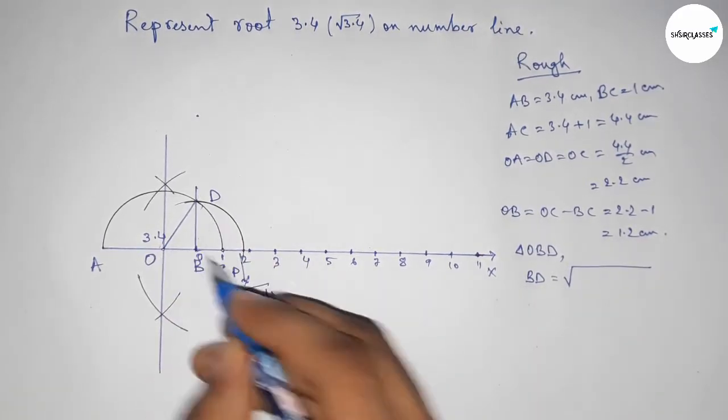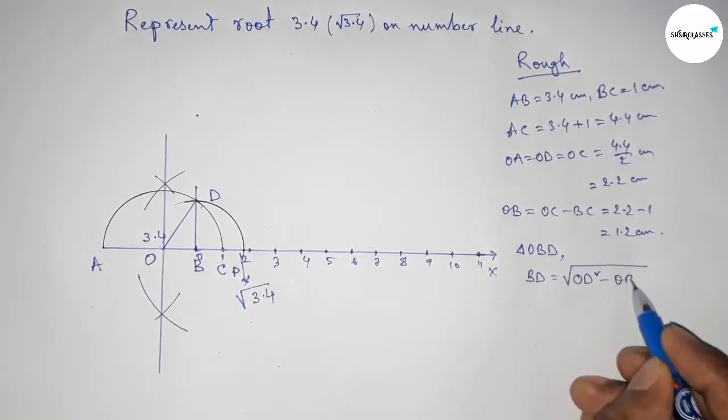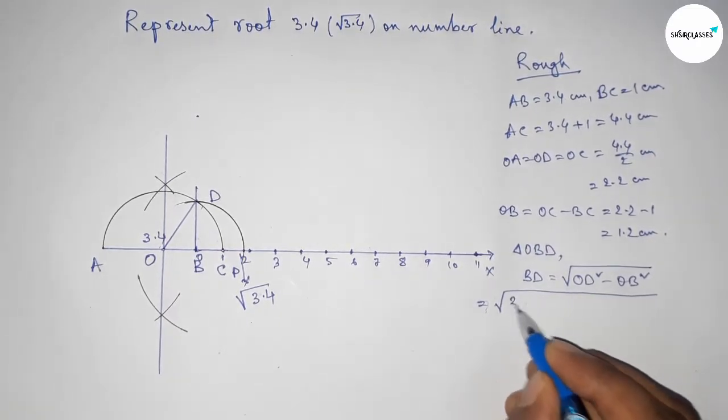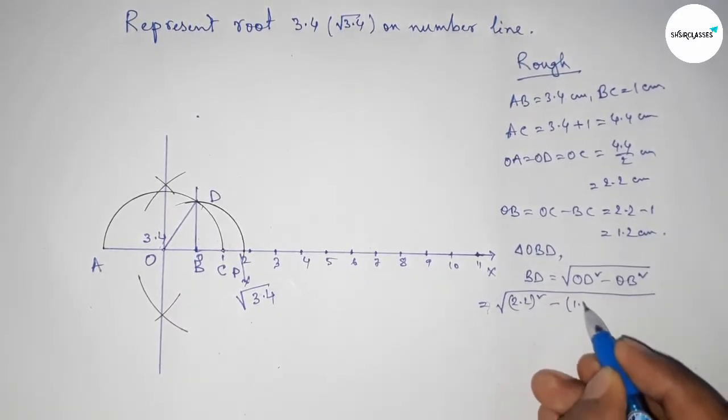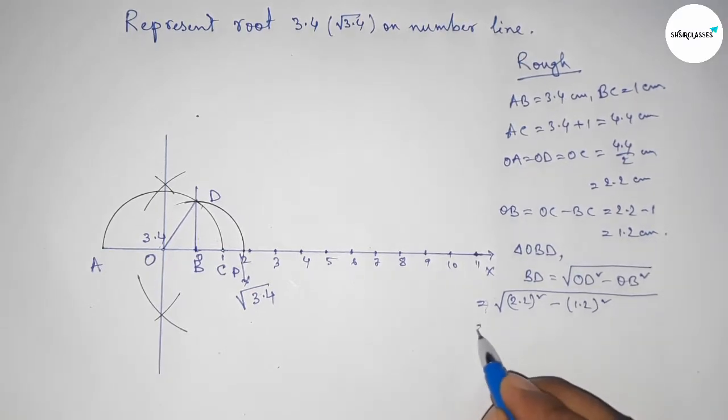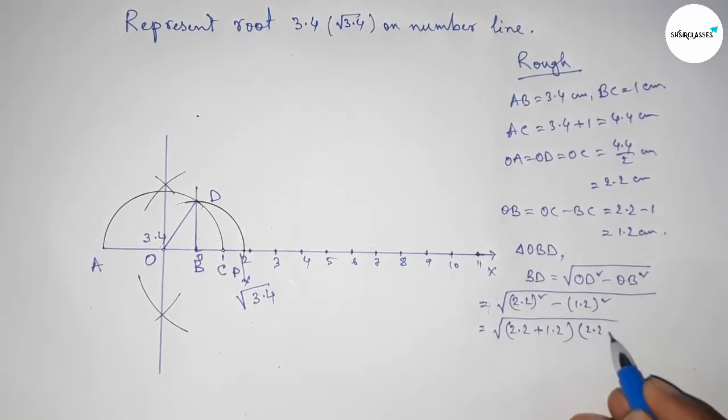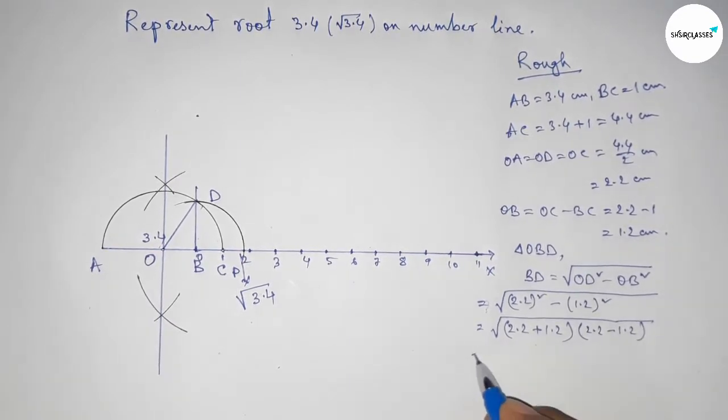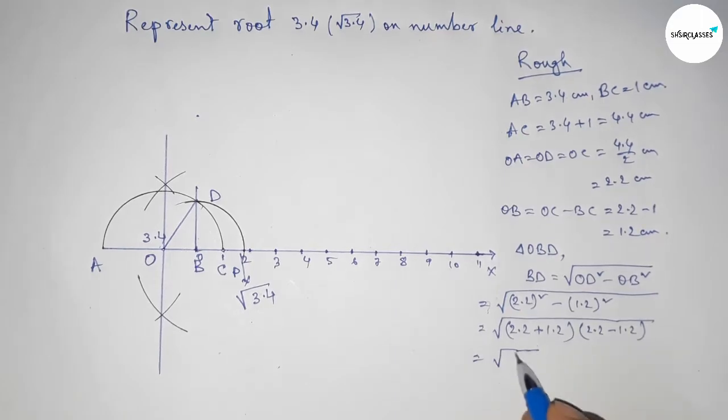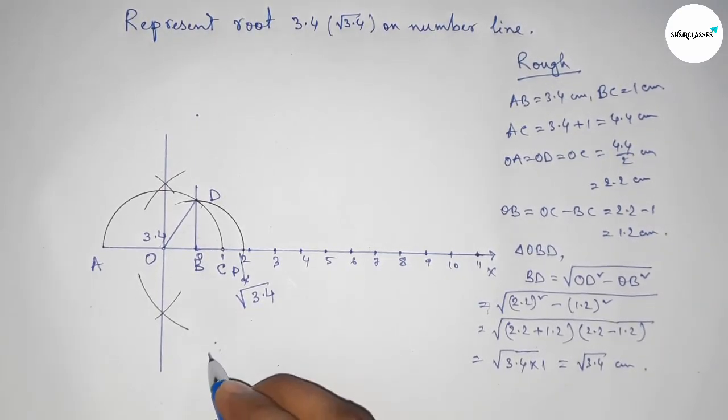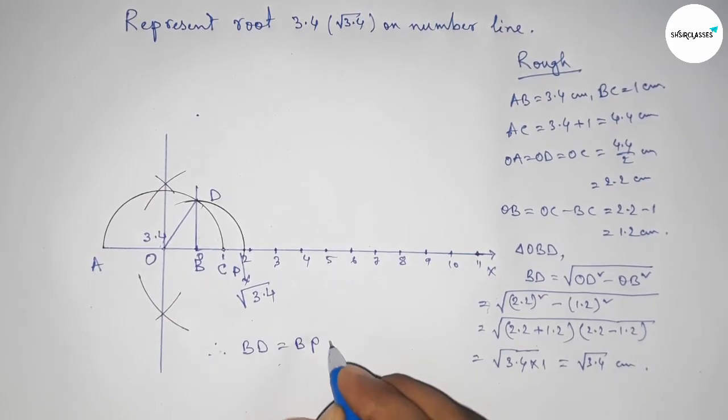BD equals the square root of hypotenuse squared minus base squared, so OD squared minus OB squared. Putting the values: 2.2 squared and 1.2 squared. Using the formula a squared minus b squared equals (a plus b)(a minus b), this gives us 3.4 and 1, so this is 3.4 centimeters. Therefore, the distances BD and BP are equal, so this is root 3.4 centimeters.